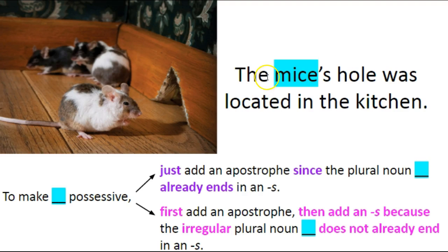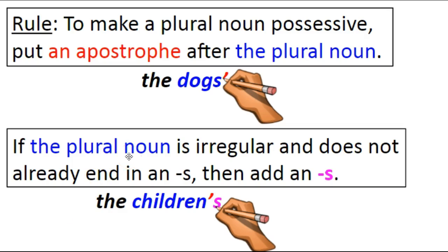Here are the mice. The sentence says 'the mice's hole was located in the kitchen.' To make 'mice' possessive, first add an apostrophe, then add an s, because the irregular plural noun 'mice' does not already end in an s. Going back to our rule: if the plural noun, like mice or children, is irregular and does not already end in an s, add the s after the apostrophe.